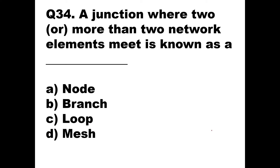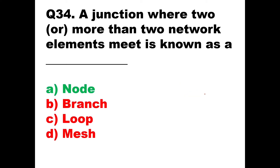Question number 34: a junction where two or more than two network elements meet is called — so if you have one branch, another branch, another branch meeting at a point with current incoming and outgoing, this junction is called a node. So option A, node, is the right answer.